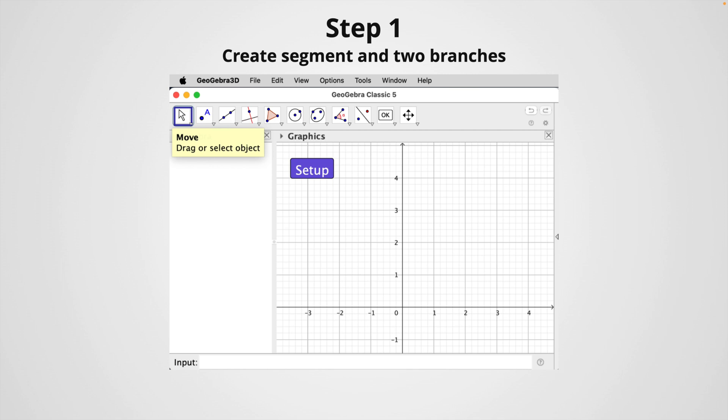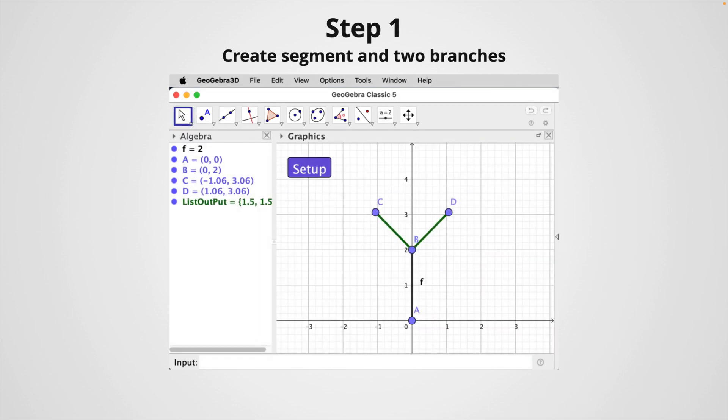To run the script inside the button, first we must select the command move, which is located on the left side, which is the first icon. Then click on the setup button. And after clicking, you will see our segment with the two branches, as you can appreciate here.